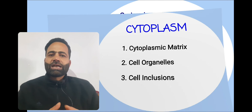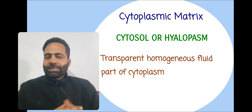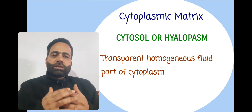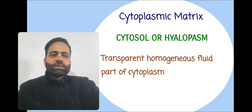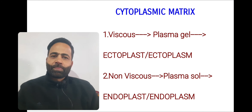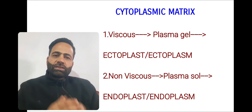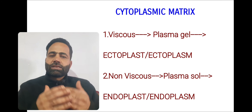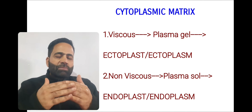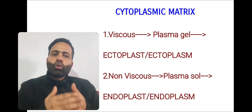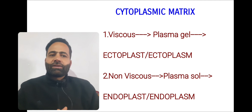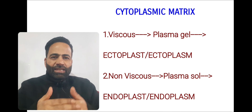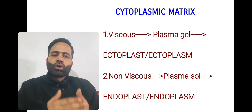Coming to the first one — the cytoplasmic matrix, also called cytosol or hyloplasm. The fluid part of the cytoplasm is called the cytoplasmic matrix; it is the transparent homogeneous fluid part of cytoplasm. This cytoplasmic matrix exists in two states: viscous and non-viscous. The viscous state is called plasma gel and is present below the plasma membrane, also known as ectoplasm or ectoplast. The non-viscous state is called plasma sol and is present internally in the cell, known as endoplast or endoplasm.